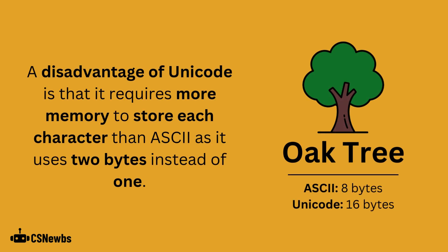A disadvantage of Unicode is that it requires more memory to store each character than ASCII, as it uses two bytes instead of ASCII's one. In this example, the term 'oak tree', including the space between the two words, would be represented in eight bytes in ASCII, but 16 bytes in Unicode.